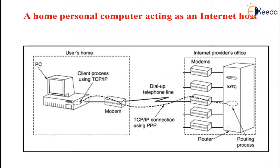The second situation in which point-to-point lines play a major role in the internet is the millions of individuals who have home connections to the internet using modems and dial-up telephone lines. Usually, what happens is that the user's home PC calls up an internet service provider router and then acts like a full-blown internet host. This method of operation is no different from having a leased line between the PC and the router, except that the connection is terminated when the user ends the session.